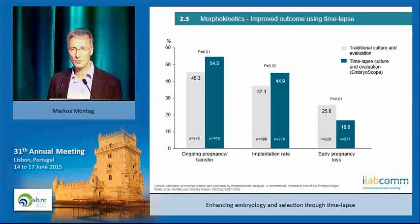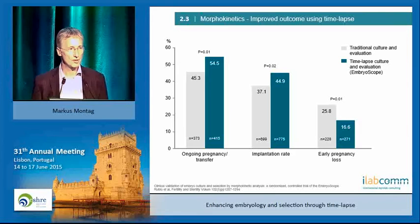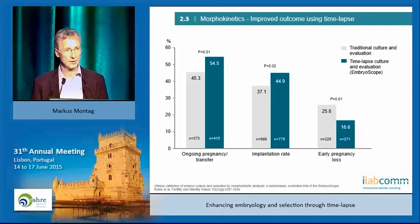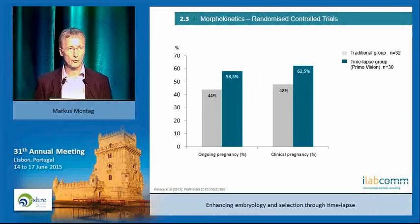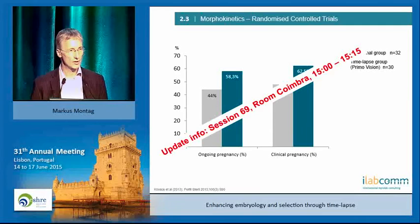Steve will later give you a nice example of how to translate that into a financial calculation, which is very interesting in our modern context of finance and medicine. With the randomized controlled trial from the EV group — the only RCT aimed at seeing improvement in implantation rate — they see a higher ongoing pregnancy rate, higher implantation rate, and reduced early pregnancy loss, which again gives a shorter time to pregnancy.